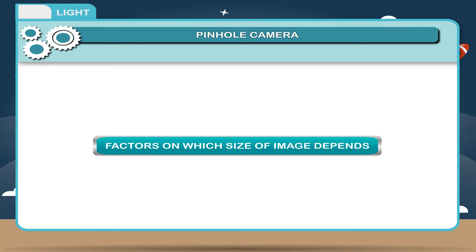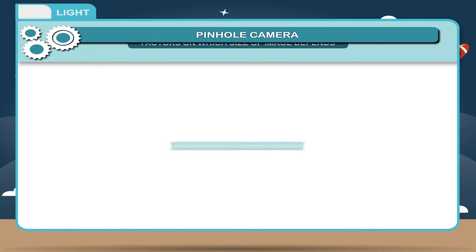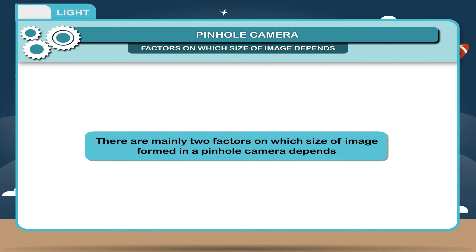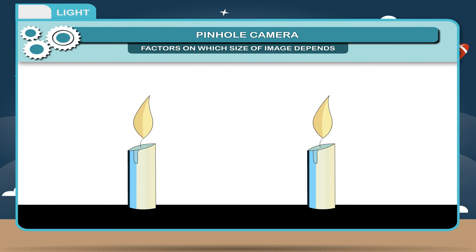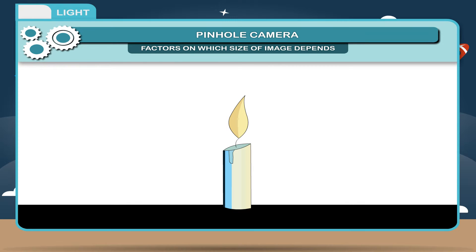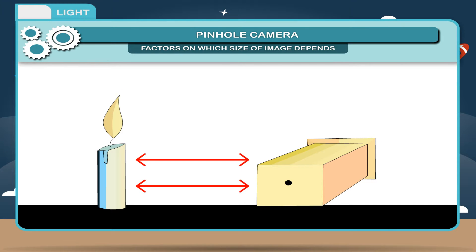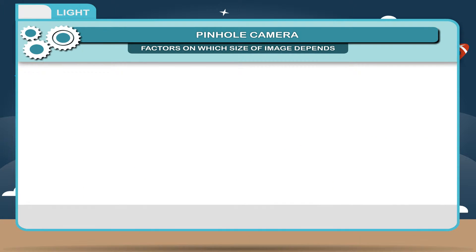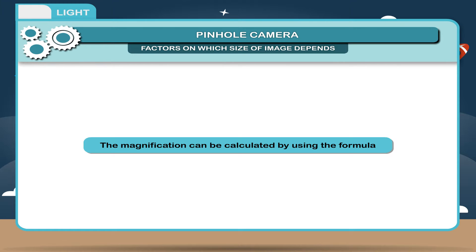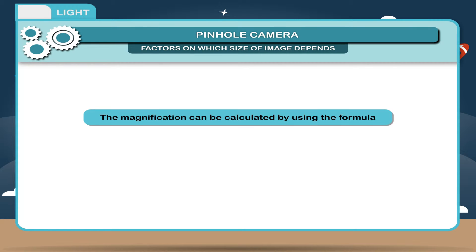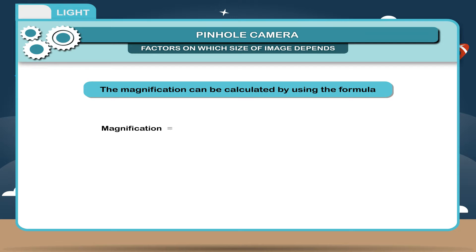Factors on which size of image depends. There are mainly two factors on which size of image formed in a pinhole camera depends. 1. Size of image depends on the size of the object. 2. Size of image also depends on the distances between the pinhole and the object and image. The magnification can be calculated by using the formula: Magnification equals length of the image divided by length of the object equals distance between the pinhole and image divided by distance between the pinhole and object.